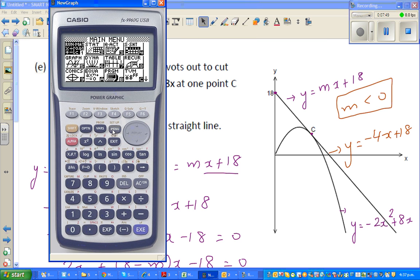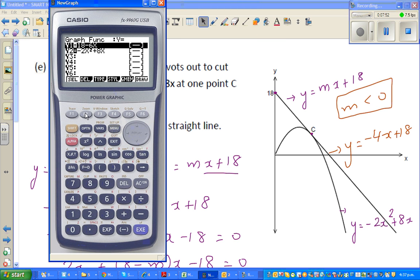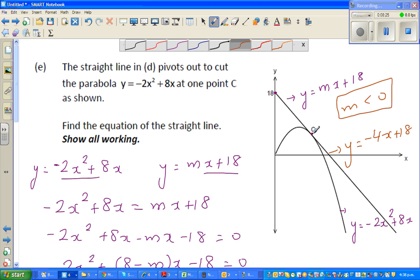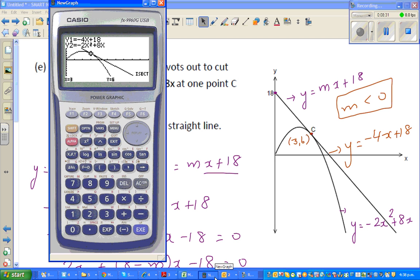So go to your graph menu, go to graph, and type in, let me delete this. So the first equation is your line, which is minus, you can write any equation first, doesn't matter, plus 18. Y2 I'll put minus 2x squared plus 8x. And see how the graph looks like. Can you see? This is a tangent. And there will be only one point of intersection. So you go g-solve and intersection. 3, 6 is the point of intersection. If the question was find the point of intersection, you could write the point of intersection is 3, 6.